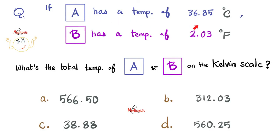And here's a question for you. If object A has a temperature of this number on Celsius, and object B has a temperature of this number Fahrenheit, what is the total temperature of A plus B on the Kelvin scale? Is it A, B, C, or D? Let me know your answer in the comments. You will find the answer key in the next video, where we shall continue talking about thermodynamics.